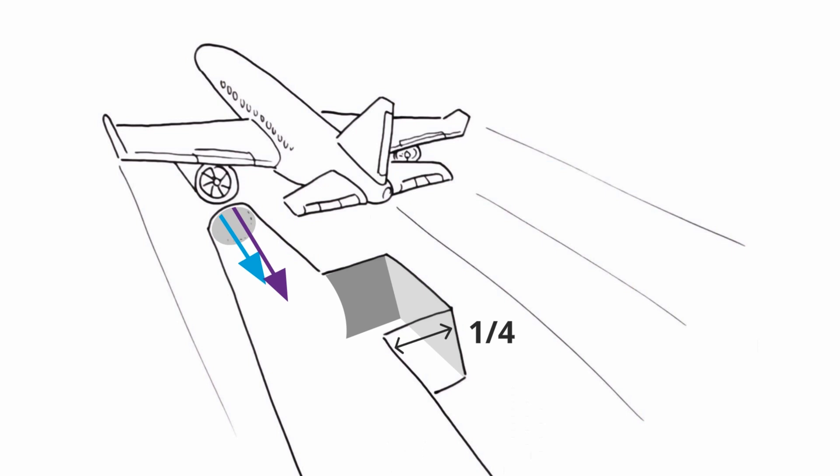Part of the sound wave enters the side branch, is reflected and combines with the undiverted wave. The diverted wave has travelled an additional one half wavelength so the waves recombine destructively, cancelling the noise.